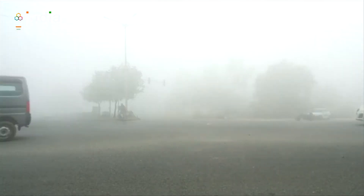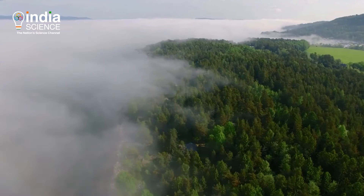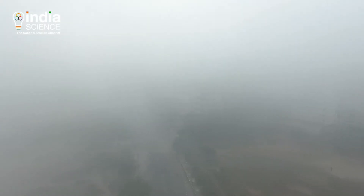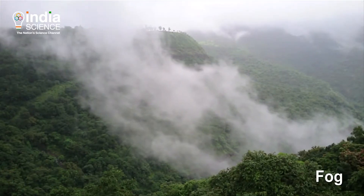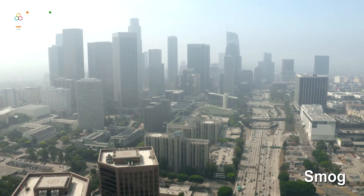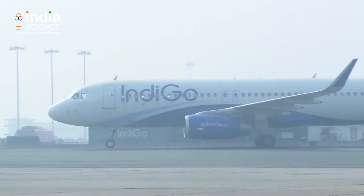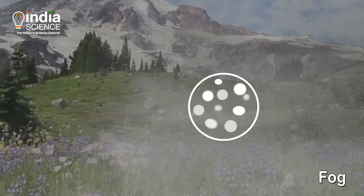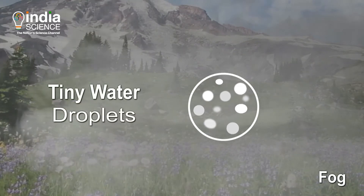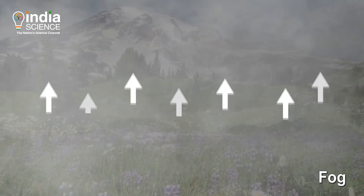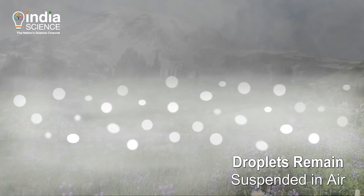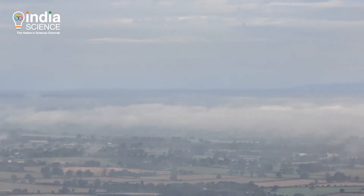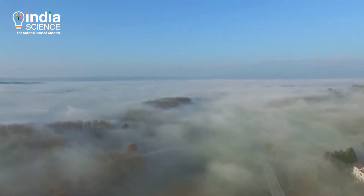We are all familiar with fog, but have you wondered what it is or how it forms? Put simply, fog is a cloud at the surface. Meteorologically, when visibility falls below 1000 meters with relative humidity greater than 75%, we call it fog. However, smog is defined as a combination of fog and smoke, when there is low visibility and low humidity. Like a cloud, fog is made up of millions of tiny water droplets or ice crystals.